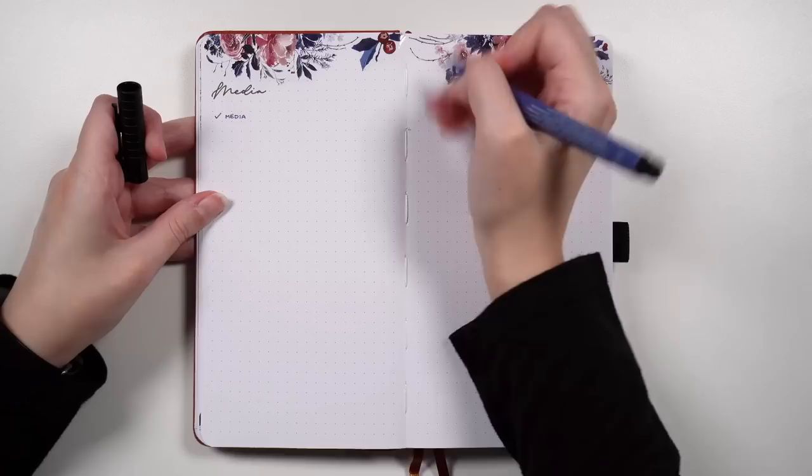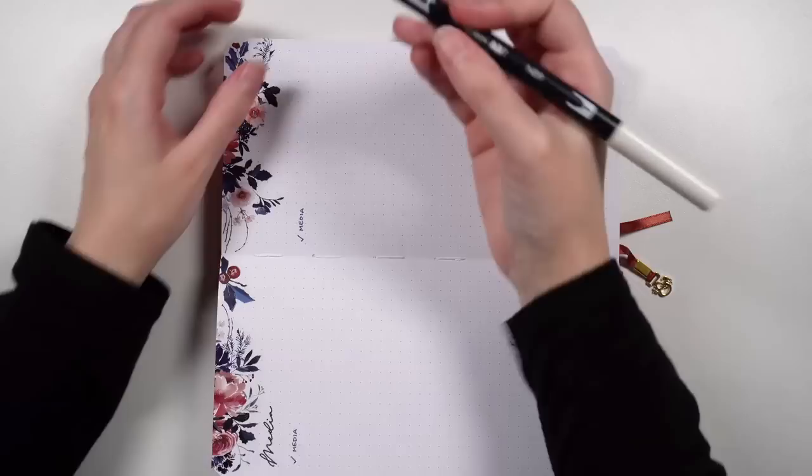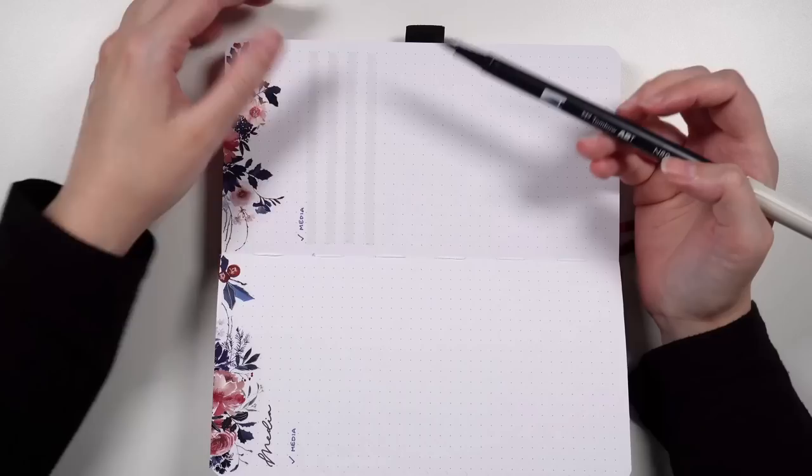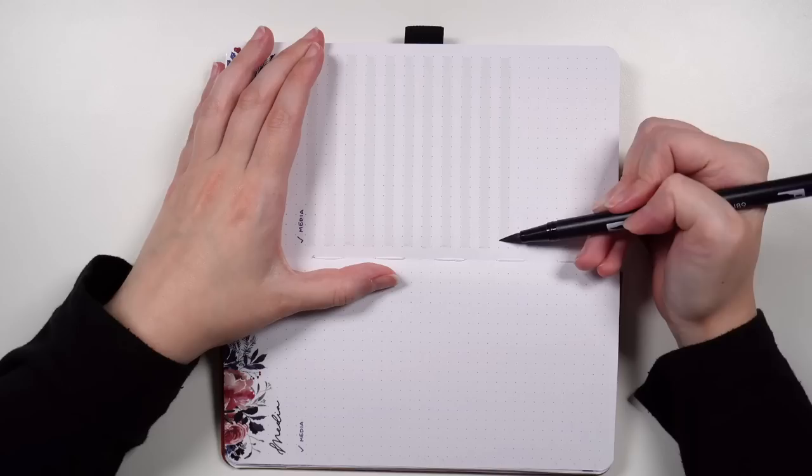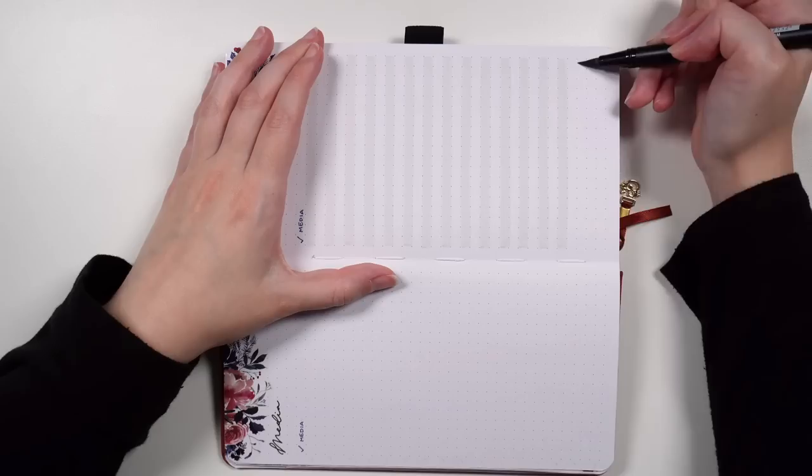This one is going to be used as a combination of a recommendations slash check this out layout. So a record of what I actually consume versus what I want to consume. At the end of this journal, recommendations that did not get consumed will get transferred into my long-term collections journal, rather than the next everyday bullet journal.